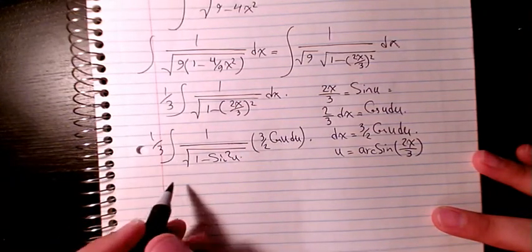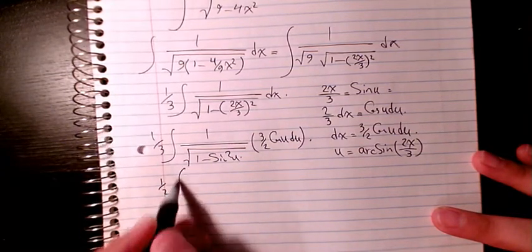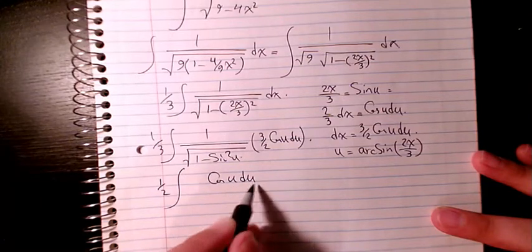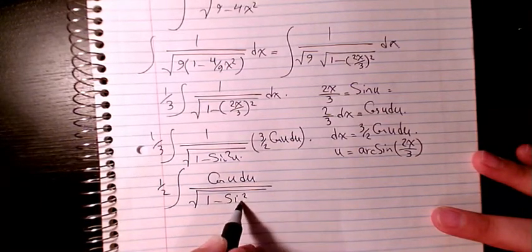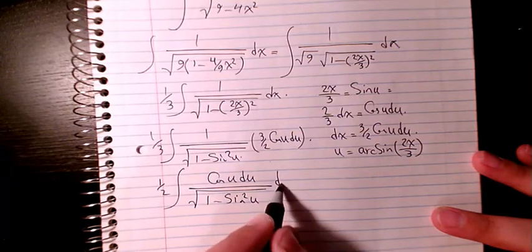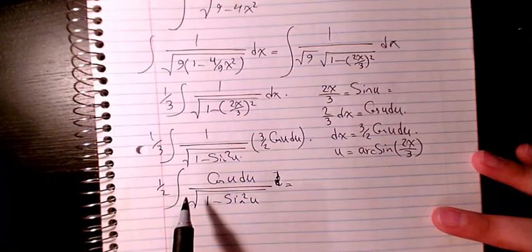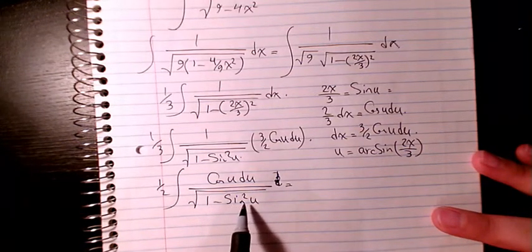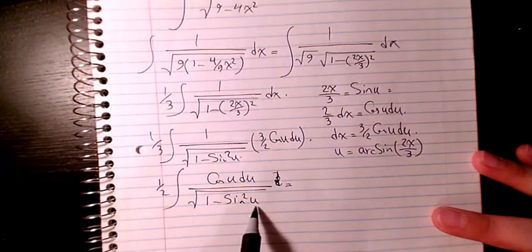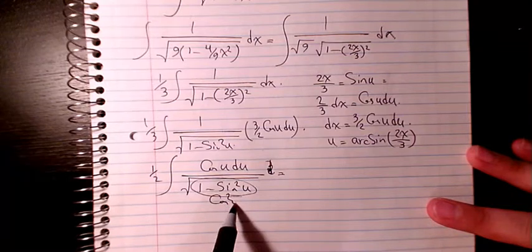So it will be 1 over 2 cosine u du. 1 minus sine squared u is here, and then I can say here 1 minus sine squared is cosine squared u, and the square root of cosine squared is just cosine.